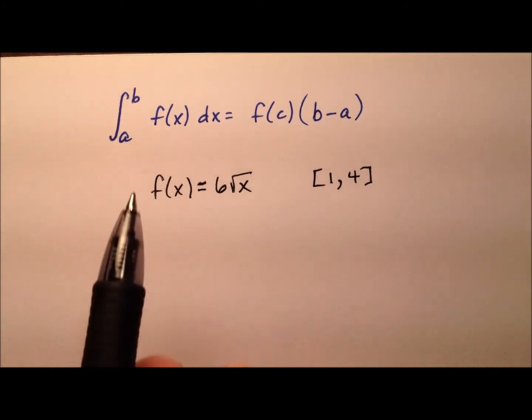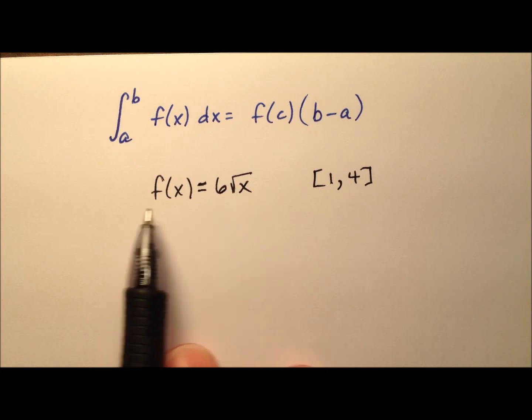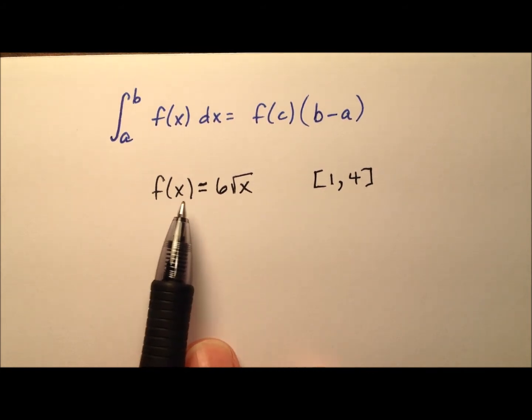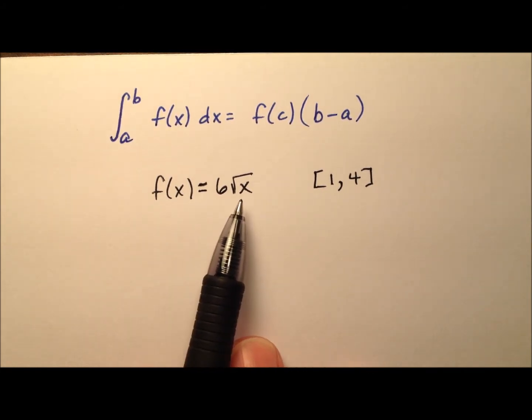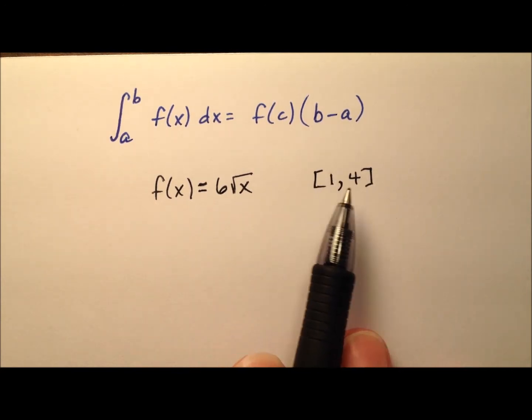In this example, I want to take a look at using the mean value theorem for integrals and apply it to this function, f of x equals 6 times the square root of x, and we're going to do so over the closed interval 1 to 4.